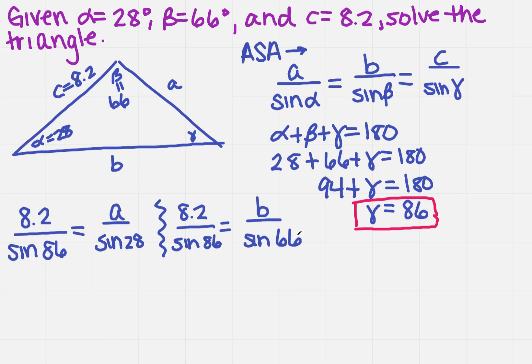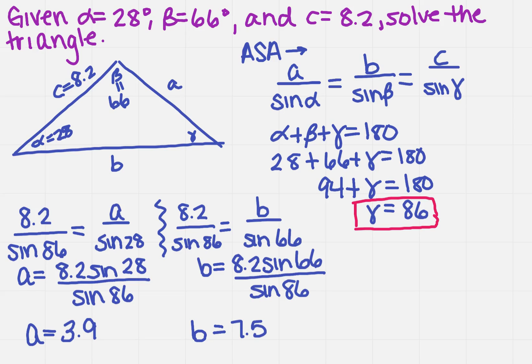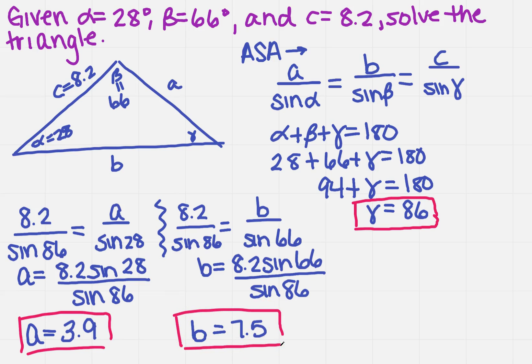To solve each equation, cross multiply and set equal. Pause the video, do those steps, then come back and check your answers. Welcome back. Hopefully these are the values you got for A and B. Make sure your calculator was set to degrees, since degrees were provided in the problem. I found A and B, which are the only remaining parts needed to solve the triangle.